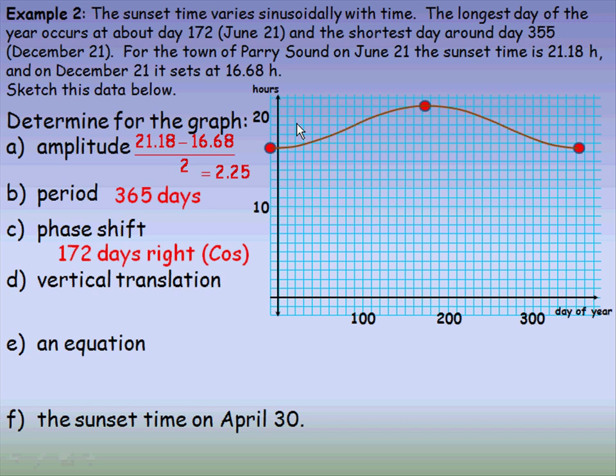For the vertical translation, I want to know where that middle axis is. To find the middle, I would average the 16.68 trough and the 21.18 peak time. Averaging those, adding them and dividing by two, gives the middle which is 18.9 up. So there's the axis right through the middle of the graph, almost 19 hours up.